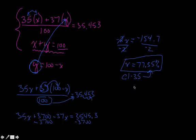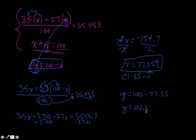Well, that's one of our answers, but we need both. And to get the second one, we're going to go back to this equation over here. And we're going to say that y then has to be equal to 100 minus 77.35.